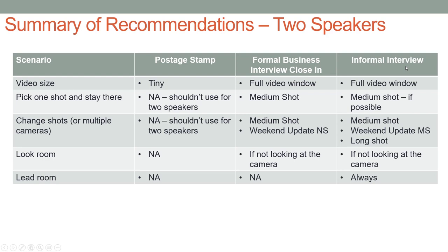For an informal interview — the Gisele and Anderson Cooper scenario — in a full video window, if I had to stay in one shot, it would be a medium shot of both of them, though that may not always be possible. If needed, do the smallest possible shot that contains them both. If I could alternate shots, I'd go from a medium shot to a weekend update medium shot — no closer than this — with long shots at the start and infrequently during the discussion just to retain viewer interest. Always use look room if they're not looking directly at the camera, and lead room if they're moving around.